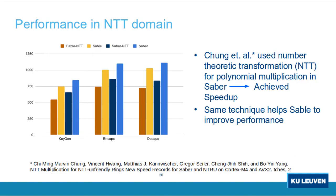Number Theoretic Transformation (NTT) is another method of polynomial multiplication. It was not used in Saber due to its power-of-2 modulus. Recently, Chung et al. applied NTT to Saber by considering a larger ring such that any product of two numbers from the original ring belongs to this new larger ring — we call that scheme Saber-NTT. Saber-NTT receives a performance improvement over Saber. By applying a similar technique, Sable also got a speedup, though this is just a first draft and not yet an efficient implementation. Florete and Espada would also receive a speedup by applying this technique.